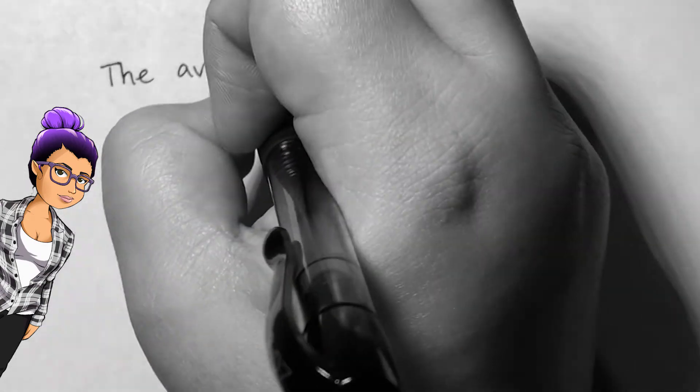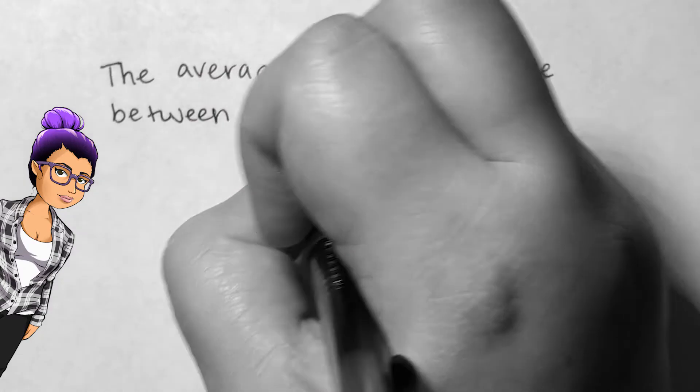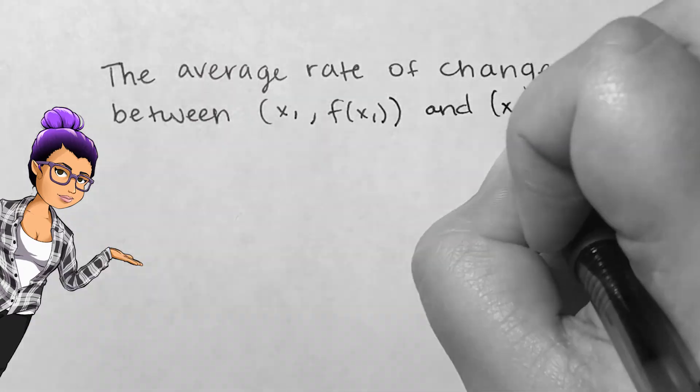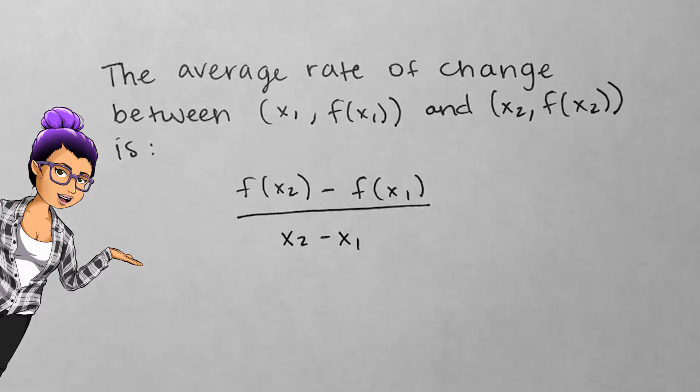Given a function f, the average rate of change between the points (x₁, f(x₁)) and (x₂, f(x₂)) looks like f(x₂) minus f(x₁) over x₂ minus x₁.